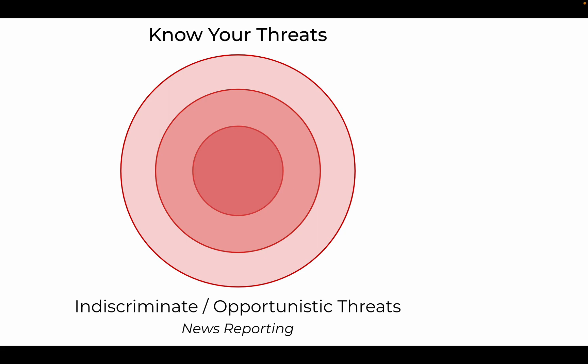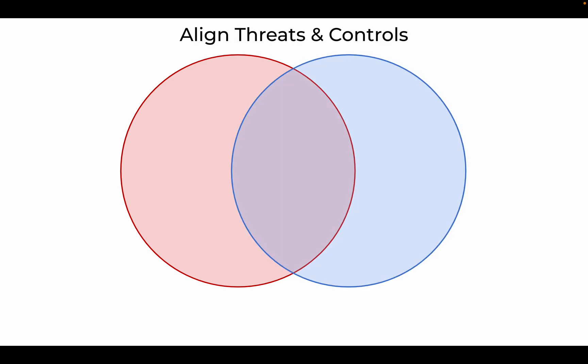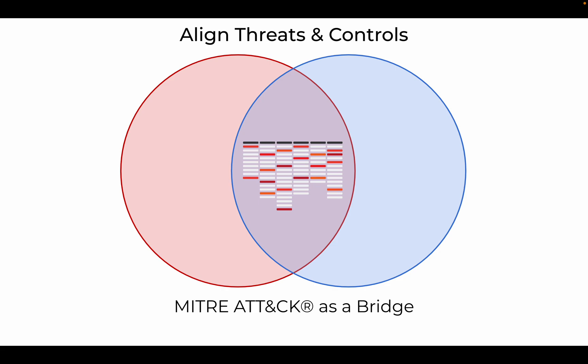Once you've gained a better understanding of your organization, technology environment, and security controls and identified relevant threats, the final risk modeling step involves aligning your threat profile with your controls. With Control Validation Compass, this step is incredibly easy and automatic — because every resource included in the tool, both controls resources and every adversary profile, is already mapped to the MITRE ATT&CK knowledgebase.